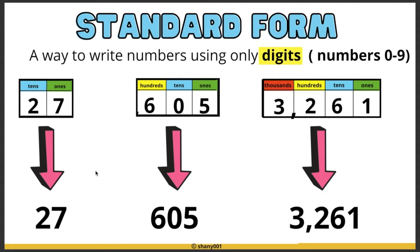Standard form is a way to write numbers using only digits. Digits are numbers from 0 to 9. So when you see 27, it's written as 27. Another example: 605 is written as 605. And 3,261 is written as 3,261. Standard form is all about the digits.